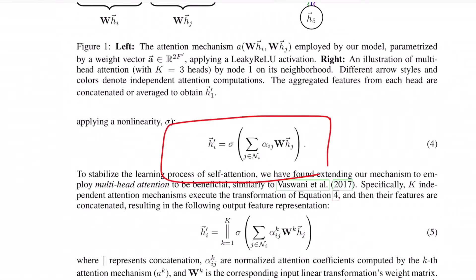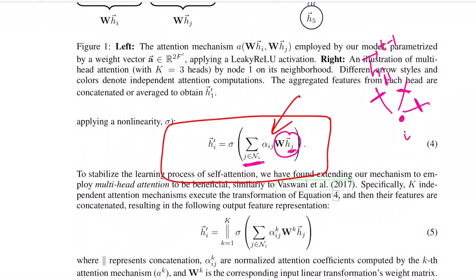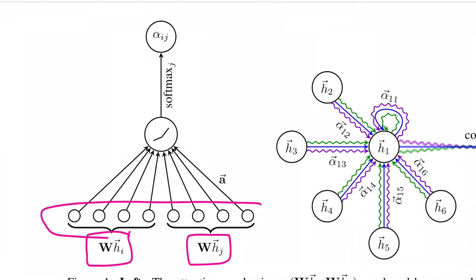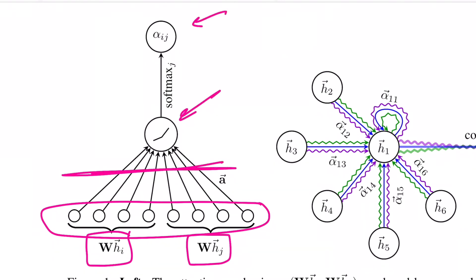The forward pass with attention weights works as follows: for the central node I, we take the hidden representation of each neighbor at the previous depth, apply a linear transformation, multiply by the respective attention weight alpha, sum over all neighbors, and apply a non-linearity. The figure clearly depicts this: transform the central and neighboring node representations, concatenate, pass through a linear layer and non-linearity followed by softmax to get the attention weight.